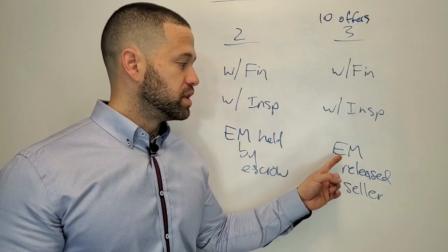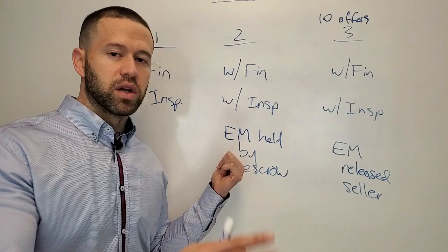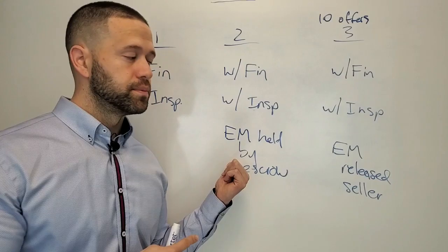But the big thing is that in this scenario, if something does go wrong, which is very rare, but it could, then the buyer can still say, oh no, like the seller lied about something. Don't give them the earnest money. I want the earnest money. And then the only way for the seller to get the earnest money is to go to court for it.